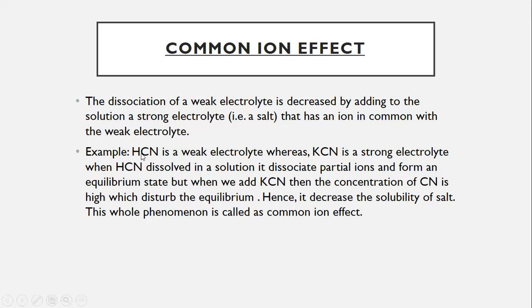When we add a weak electrolyte in a solution, its ions partially dissociate and maintain an equilibrium between them. But when we add a stronger electrolyte which has a common ion, like for example, HCN is a weak electrolyte. When we add it in a solution, it dissociates and maintains an equilibrium. Then we add a strong electrolyte, for example, potassium cyanide. So we can see that there is a common ion, cyanide and cyanide.